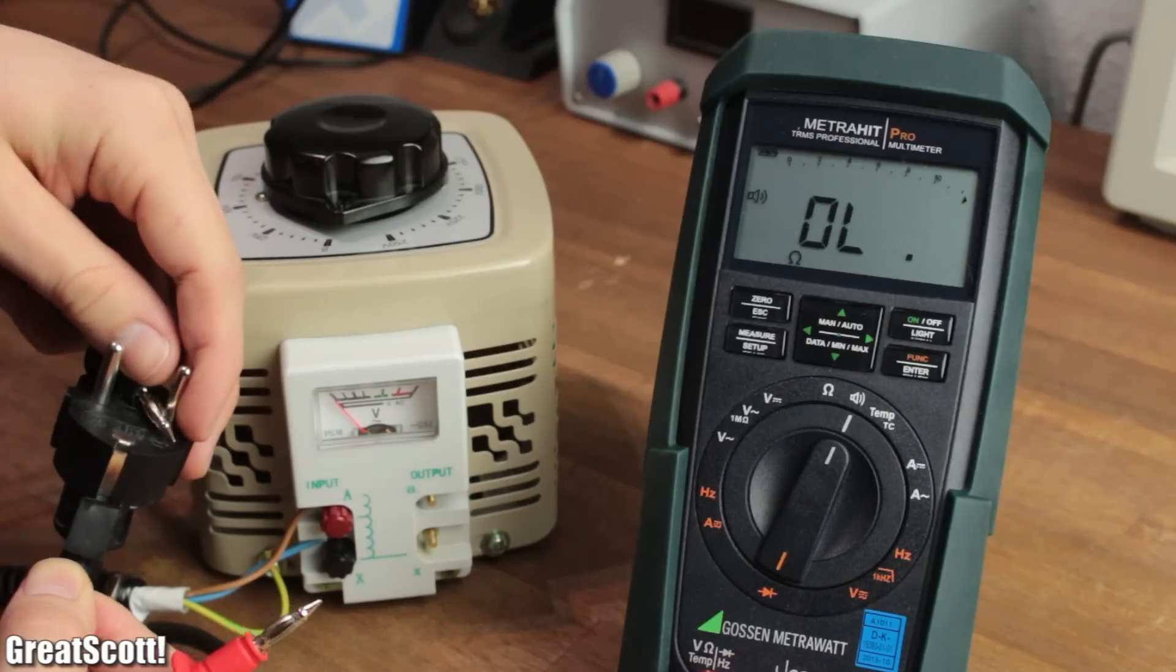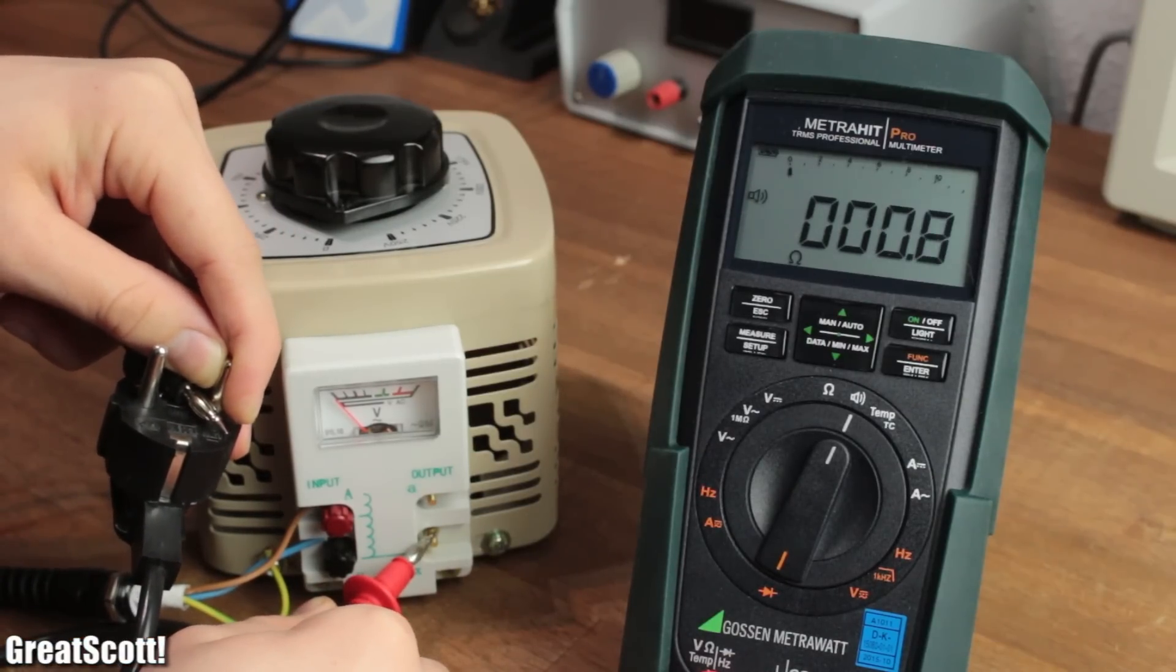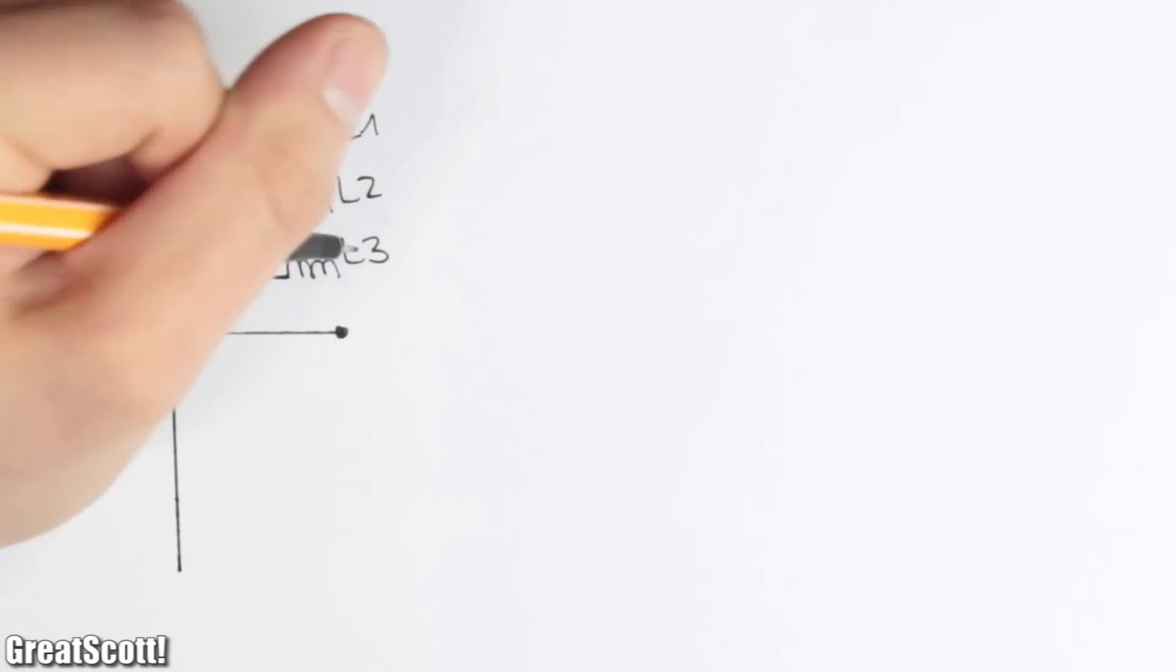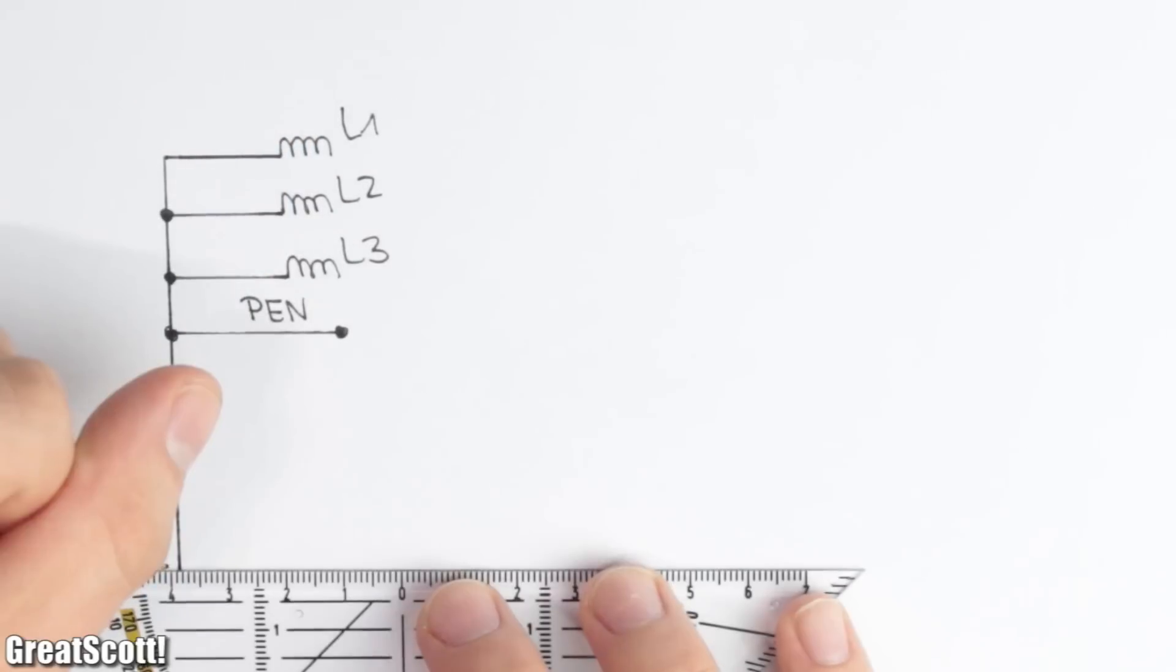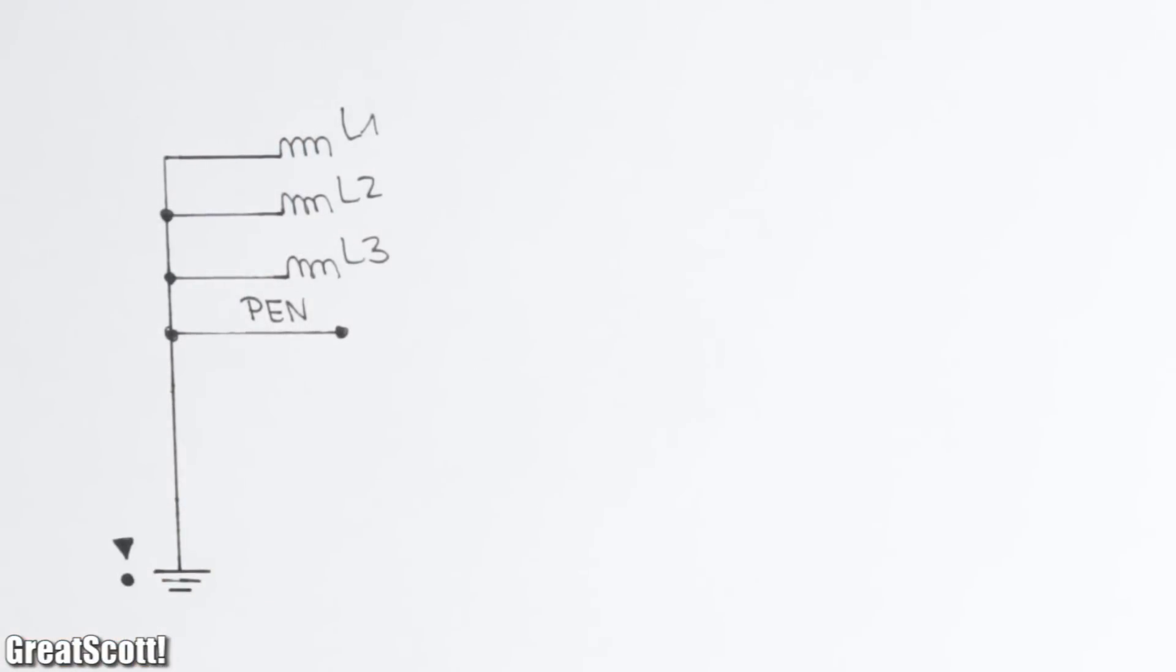The only problem is that the input and output is not galvanically isolated. This can be a problem with the TNCS low voltage grid that is available here in Germany. We got three live wires and a combined protective and neutral wire. But the important thing is that the star point of the supply transformer is earthed.